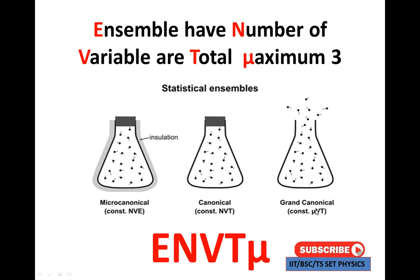Next is the grand canonical ensemble. Temperature and volume are constant, and we can also add chemical potential μ. In the grand canonical ensemble, the number of variables totals a maximum of three: E, N, V, T, and μ.